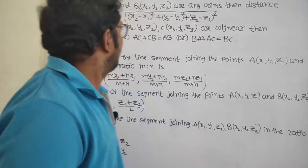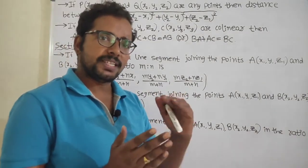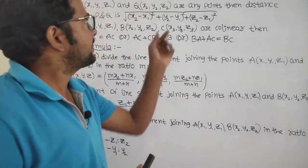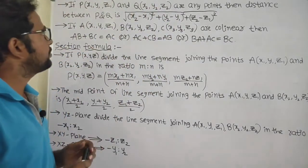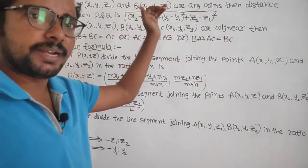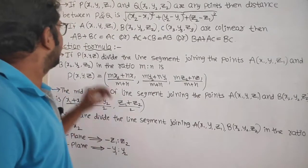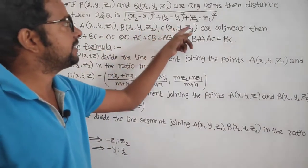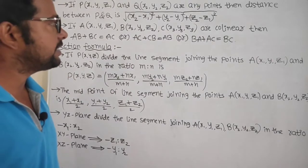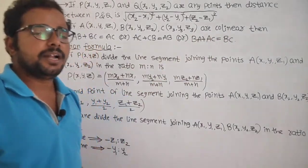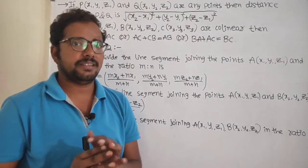Now the important formulas we use in this chapter. First, the distance formula. In 2-dimensional geometry, the distance between (x1, y1) and (x2, y2) is the square root of (x2 − x1)² + (y2 − y1)². If A, B, C are collinear points, then AB + BC = AC.